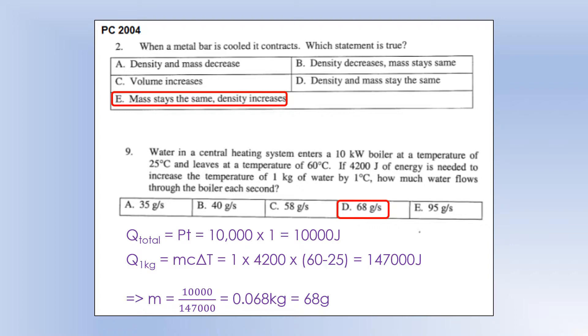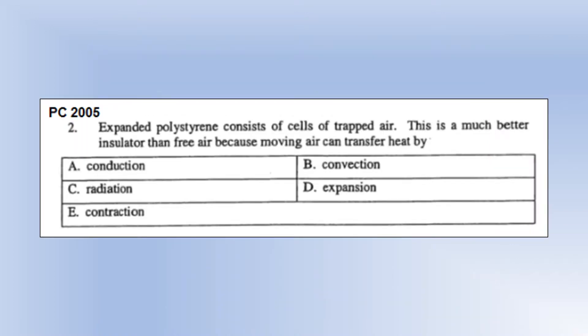Expanded polystyrene consists of cells of trapped air. This is a much better insulator than free air, because moving air can transfer heat by... Well, if it's moving, that means convection is an option, because that's what's going to happen. We could still have the process of conduction or radiation if it's stationary.